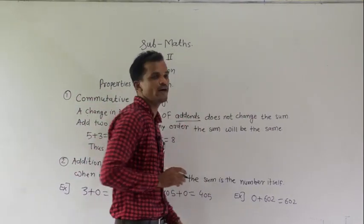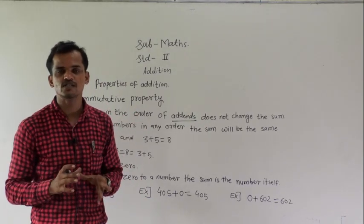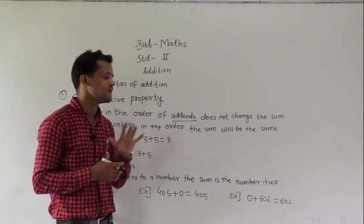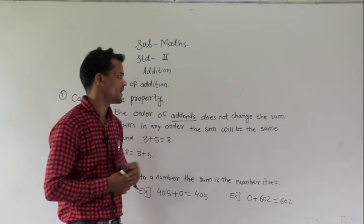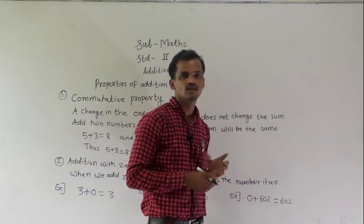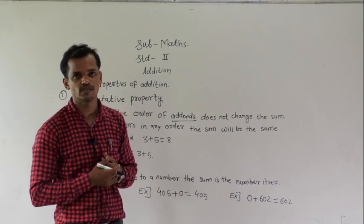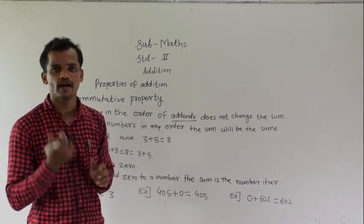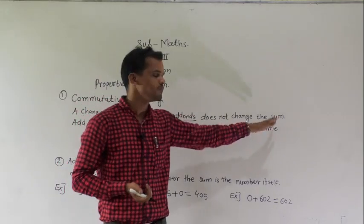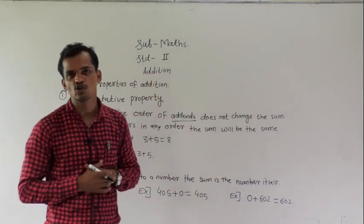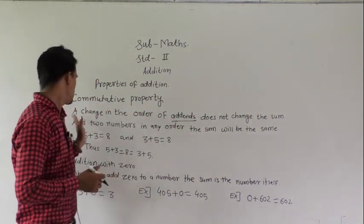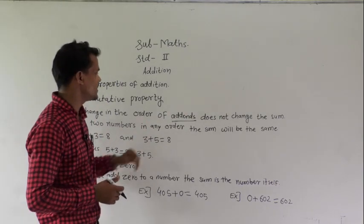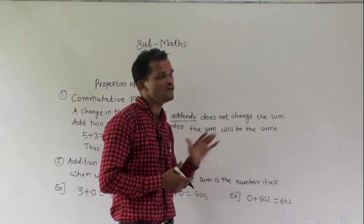What do we mean by addends? The numbers that we are going to add are called addends. And what is the sum? The result of addition is called the sum. So if we change the order of the addends, the sum does not change. In another way, we can say: add two numbers in any order, the sum will be the same.